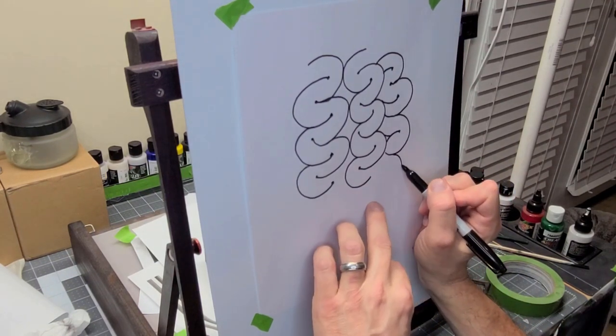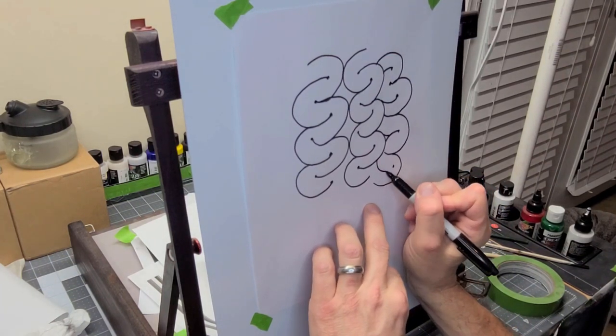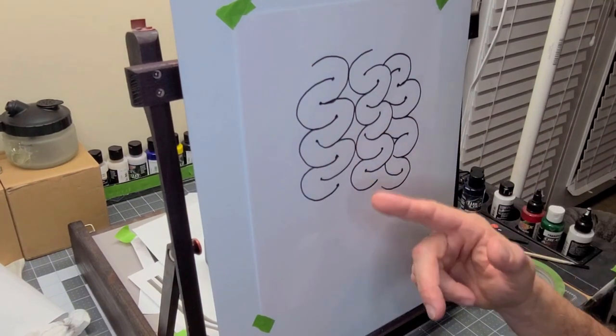So that's basically all you need to do is be able to draw a C and a dot and you got yourself some brains. All right. So let's move on to the painting.